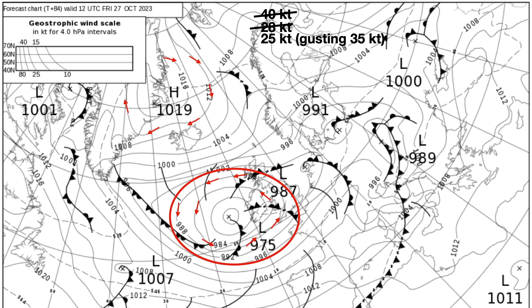We know the Geostrophic Wind was about 10 knots more than the surface wind, so any gusts can't possibly exceed that margin. I would predict the surface wind will be about 25 knots gusting up to 35, and based on the isobar wind direction, the wind will be from the west-southwest.